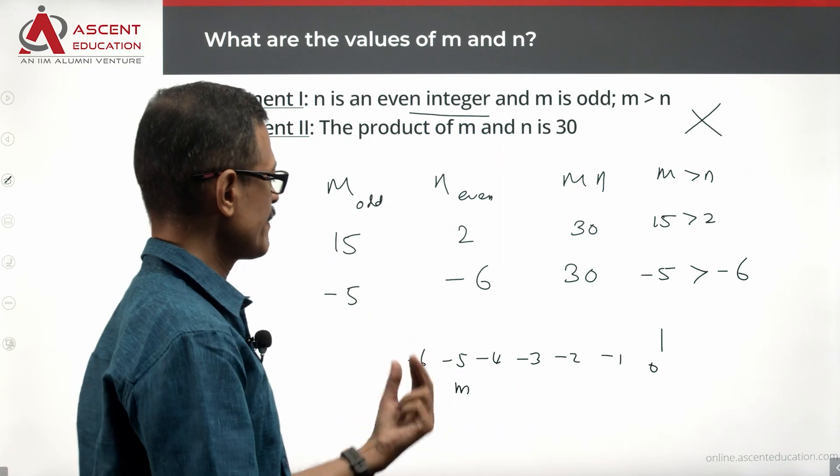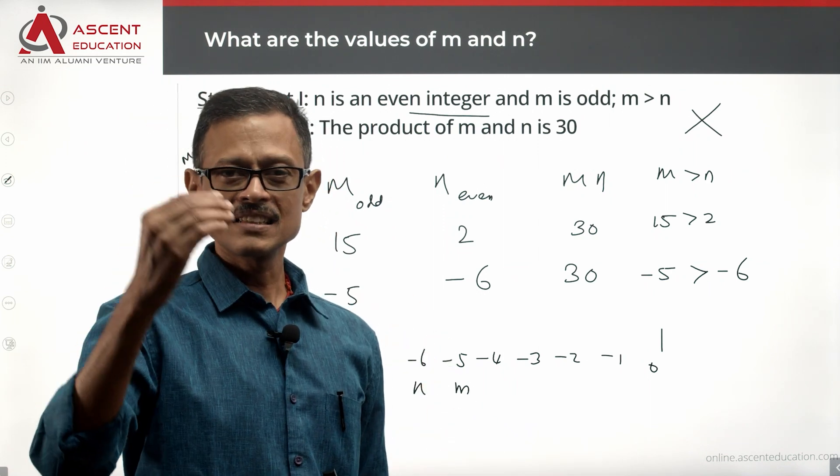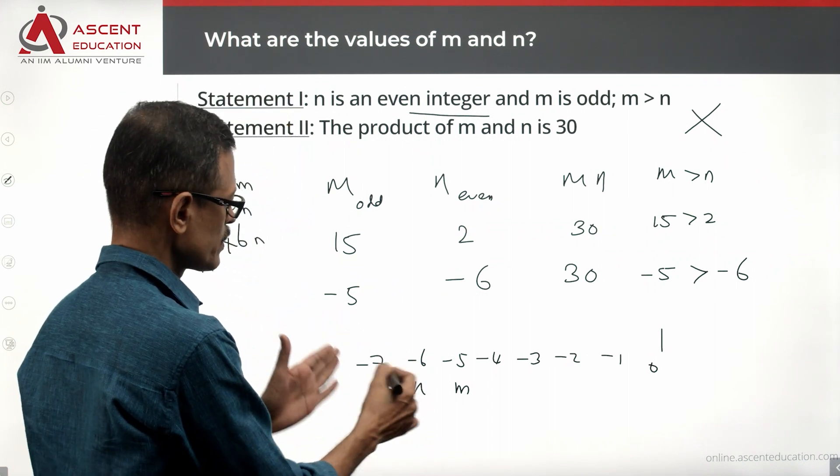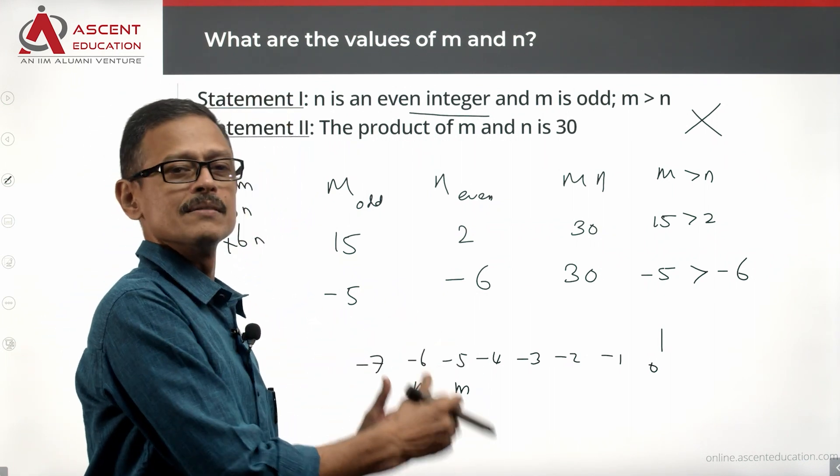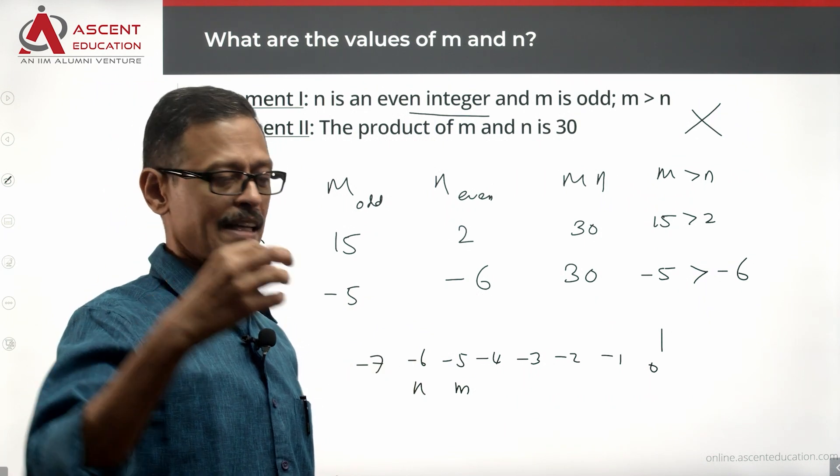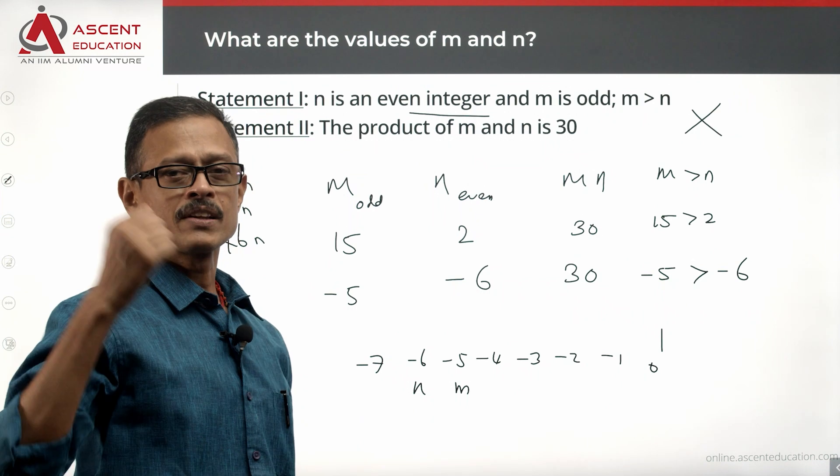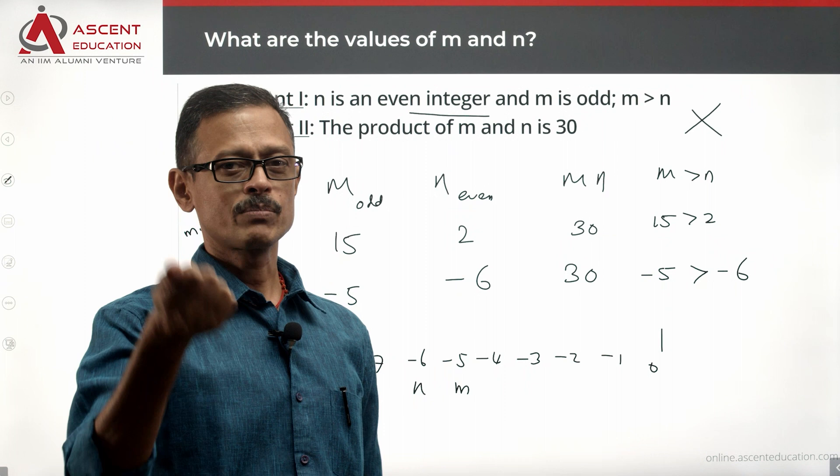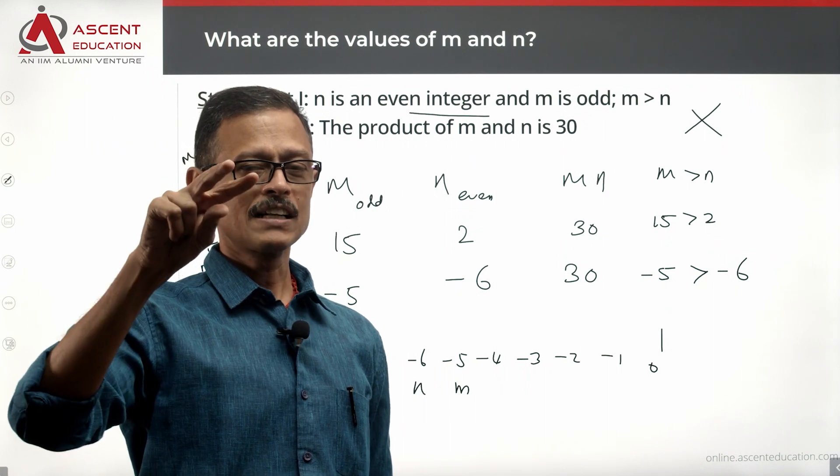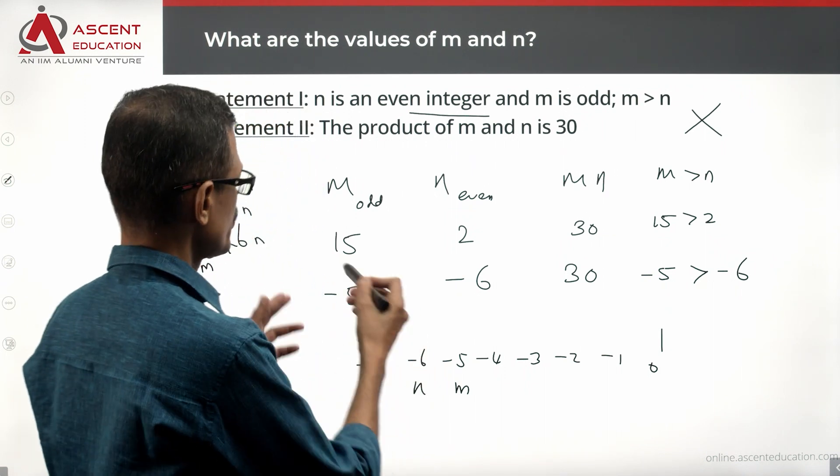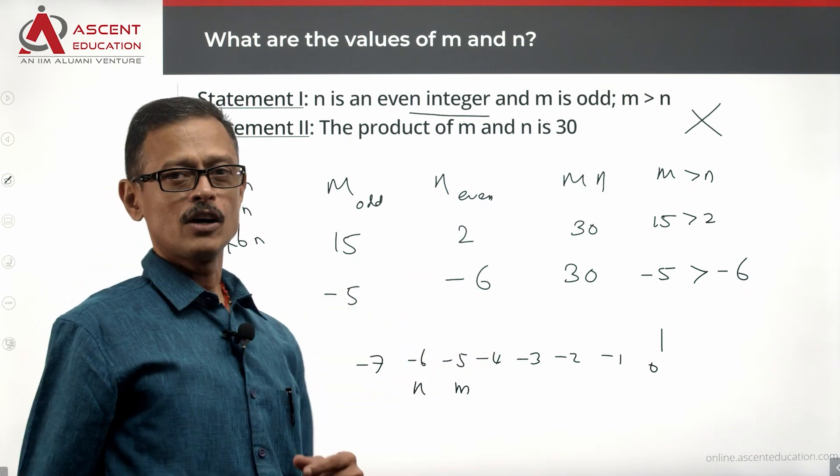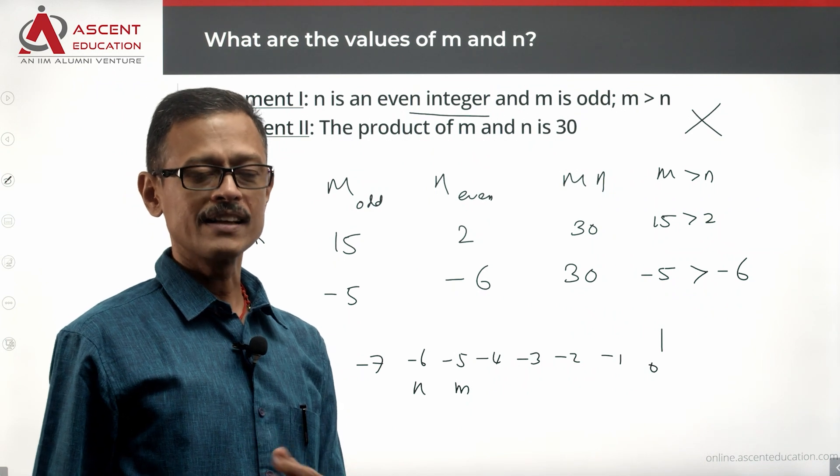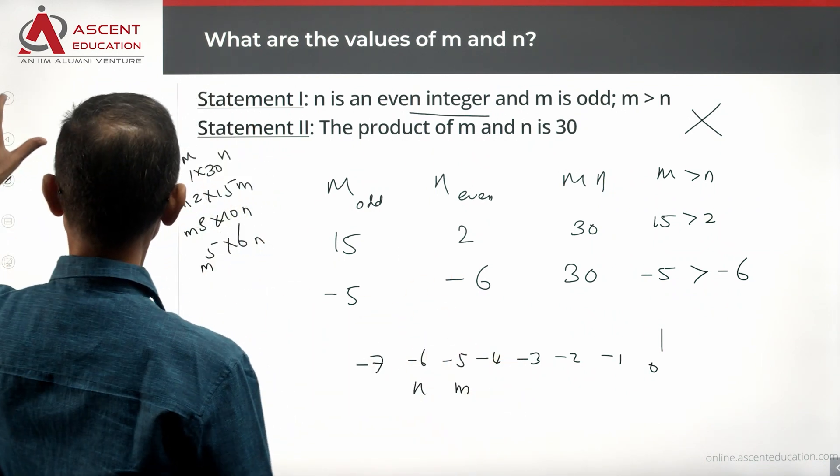Takeaway 1: In negative numbers, lesser the value, greater the magnitude. Minus 7 has greater magnitude than minus 6, but minus 7 as a number will be less than minus 6. As you go to the left, the value keeps decreasing. Takeaway 2: Product of 30 can be obtained by multiplying two positive numbers or two negative numbers. We should not ignore the possibility of multiplying negative numbers to arrive at 30. These are key takeaways from this question. This would be useful in avoiding such mistakes in future.